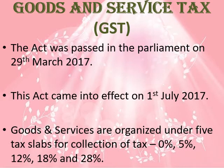Goods and services are organized under five tax slab categories. The first is 0%, meaning nil. Then 5%, 12%, 18%, and 28%. A 0% tax rate applies to about 50% of the items in the consumer price index. Other goods and services apart from that 50% will have the different tax slabs — 5%, 12%, 18%, and 28%.